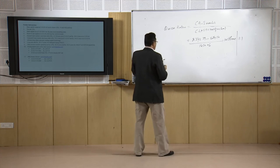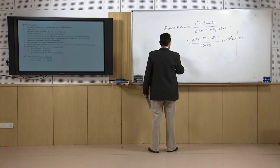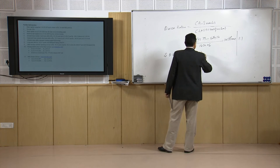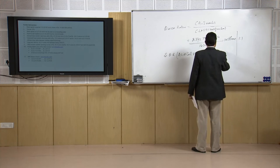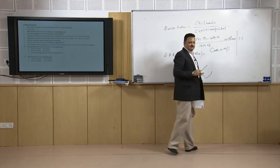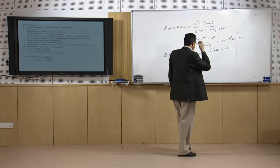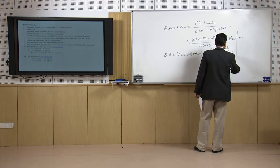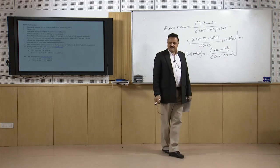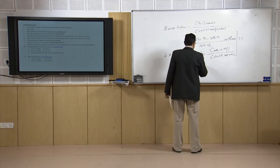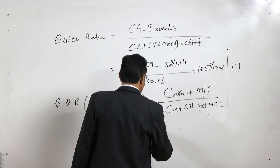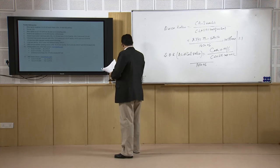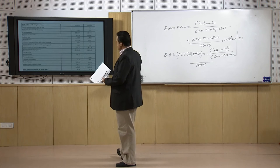The next ratio is the super quick ratio, also called the acid test ratio. For calculating the acid test ratio we take cash plus marketable securities — cash in hand and cash at bank plus very short-term liquid investments — divided by current liabilities plus short term loan net of the working capital limit. The denominator remains 1450 since the short term debt is entirely the working capital limit.